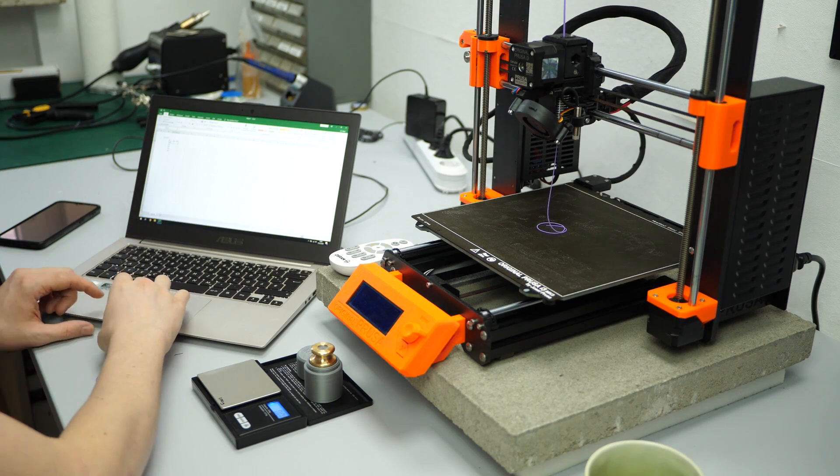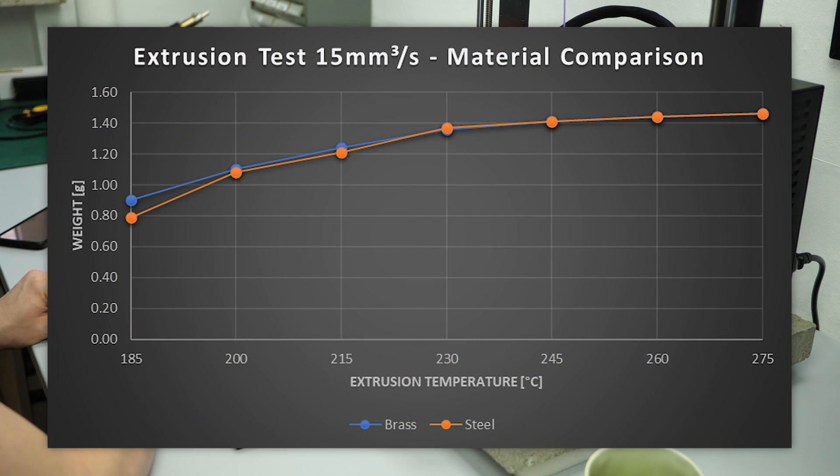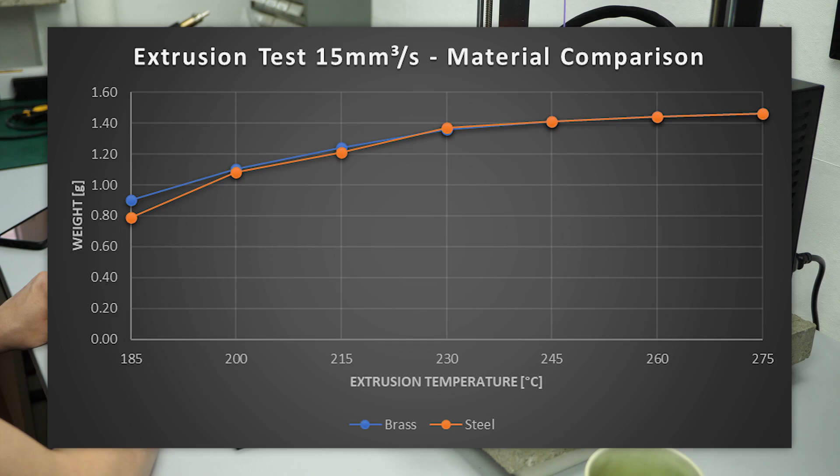The result was that only at low printing temperatures below 200 degrees Celsius, I was able to see a noticeable difference in the extruded amount, which probably means, if you are not printing really cold, there shouldn't be an increase in extrusion temperature necessary.